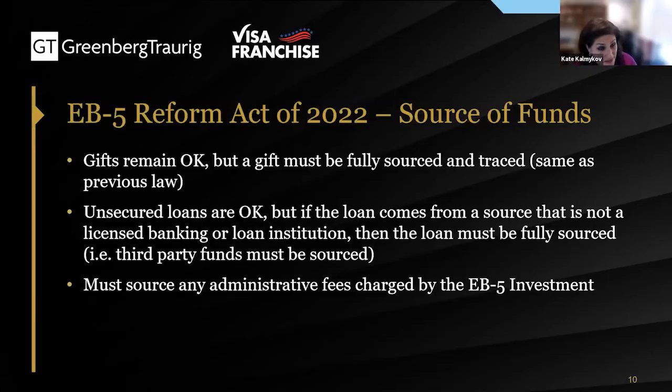There doesn't have to be a familial relationship either. For example, one couple had a housekeeper for 30 years and couldn't imagine retiring in the U.S. without her, so they gifted her the money to do the EB-5 and she joined them. Gifts are okay as a source of funds.